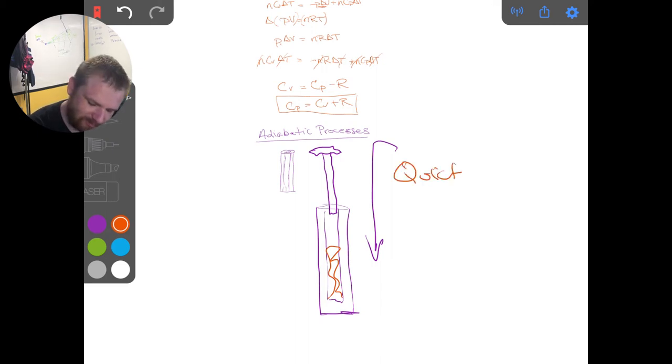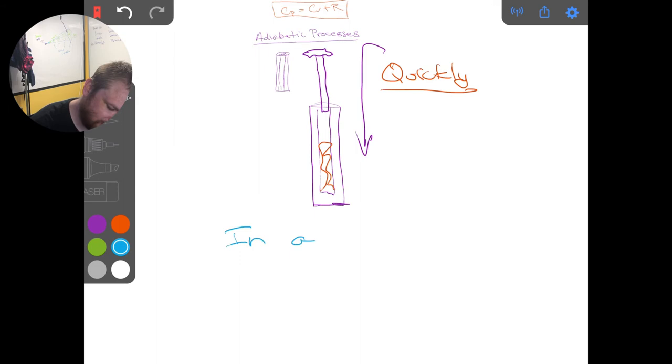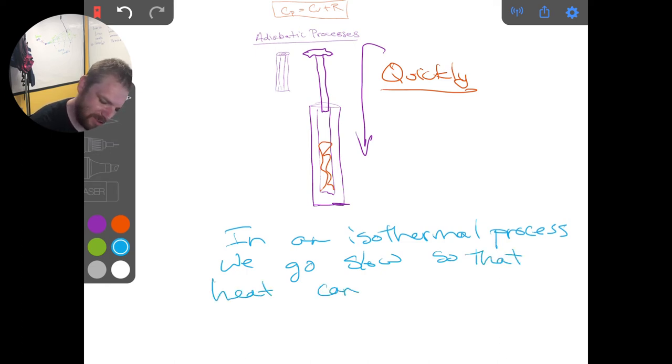So what does the fact that we're doing it quickly change about this situation? Well, with an isothermal process, that was also an external force being applied, but we applied it very slowly. We let the force go slowly. Why did we have to apply it slowly? In an isothermal process, we go slow so that heat can be exchanged with environment in response to work.